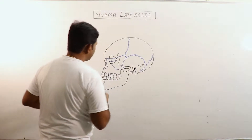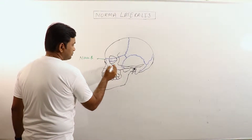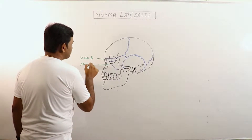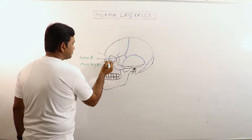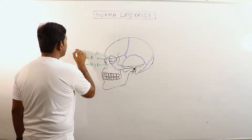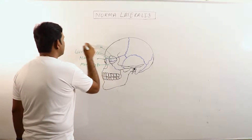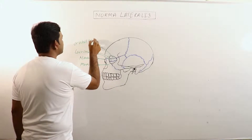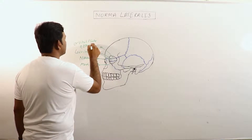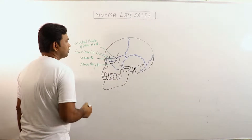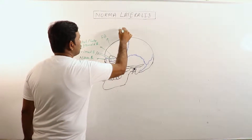We can observe that this is the nasal bone, this is the maxillary bone, and this one is the lacrimal bone. This is the orbital plate of the ethmoid bone. This is the frontal bone and this is the coronal suture.